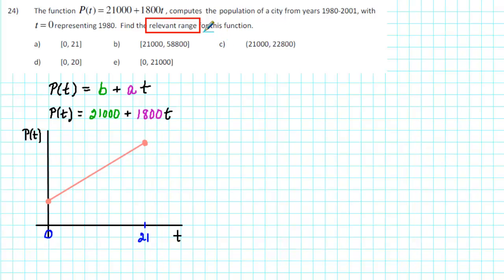Our goal is to find the relevant range for this function. So what we need to do is to find the populations from time = 0 to time = 21. We know that the initial population was 21,000. We'll need to calculate the ending population.